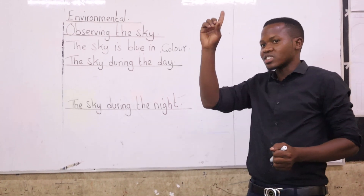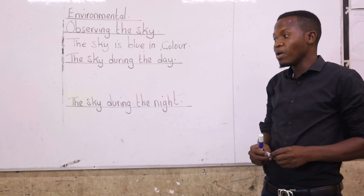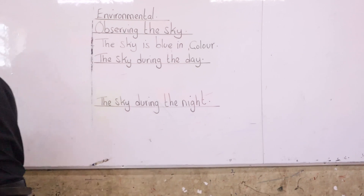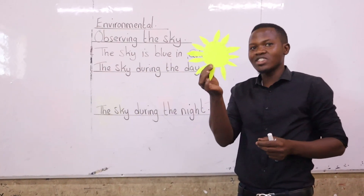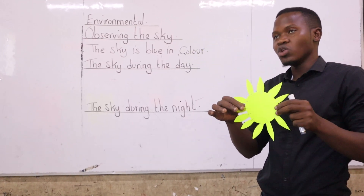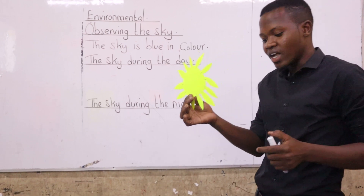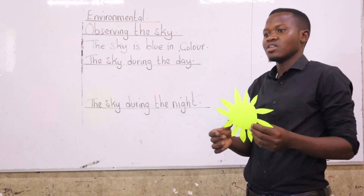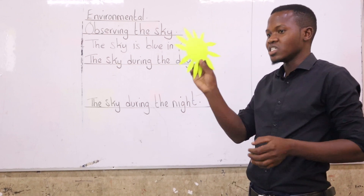During the day, if you look at the sky, there are things that you are able to see. Number one — look at this thing here. What is this? Sun. So during the day, if you look at the sky, you will be able to see the sun. And the sun gives us light during the day. That's why we have the light.